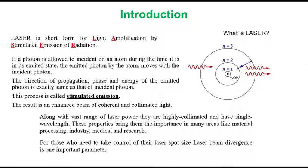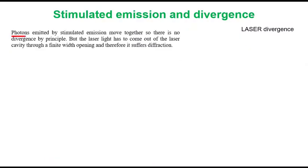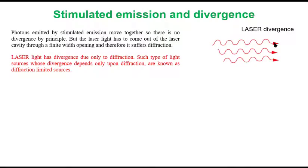Let us know more about divergence or collimation of the light beam. The photons emitted by stimulated emission move together so that there is no divergence by principle. But the laser light has to come out of the laser cavity through a finite width opening. And therefore, it suffers diffraction. So in principle, every photon is going in the same direction with same phase and wavelength. But it has divergence due to diffraction. The diffraction is the only cause behind the divergence of the laser. Such type of light sources whose divergence depends only upon the diffraction are known as diffraction limited sources. And the laser is one example of that.